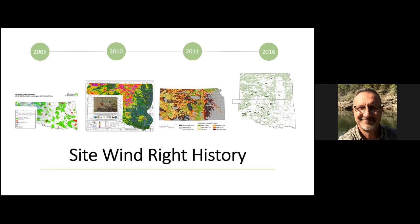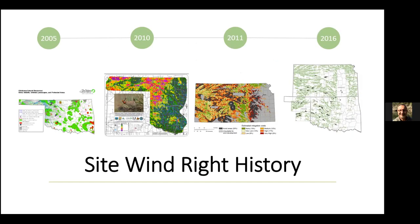We learned a lot from that and realized we had to take a somewhat different approach. At the same time, other states and state agencies — you see an example from Nebraska, north of Oklahoma — were also thinking about this the same way. They incorporated some of the same data and approaches but also some different things, which informed where we ultimately landed on the right: the very first version of Site Wind Right. That covered Oklahoma, the bottom of Kansas, and a portion of the Texas Panhandle, where we were seeing a lot of initial development. We wanted to provide a tool to developers that would help steer that development to places with the least amount or no impact to those important habitats.